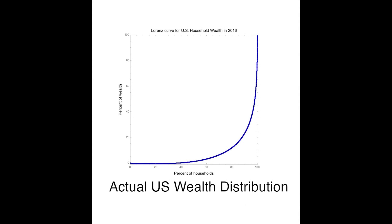Remarkably, while both plots are not bad approximations to real U.S. wealth data, the second plot is a significantly better fit than the first one. Here is the actual Lorenz curve of the U.S. in 2016, and you can see that nearly 30% of societal wealth is held by a fraction of the population too small to be noticeable on the graph. So we see that oligarchy does not happen just in former Soviet republics. This plot shows that 30% of U.S. household wealth is currently held by such a small fraction of the population that it can only be characterized as an oligarchy.